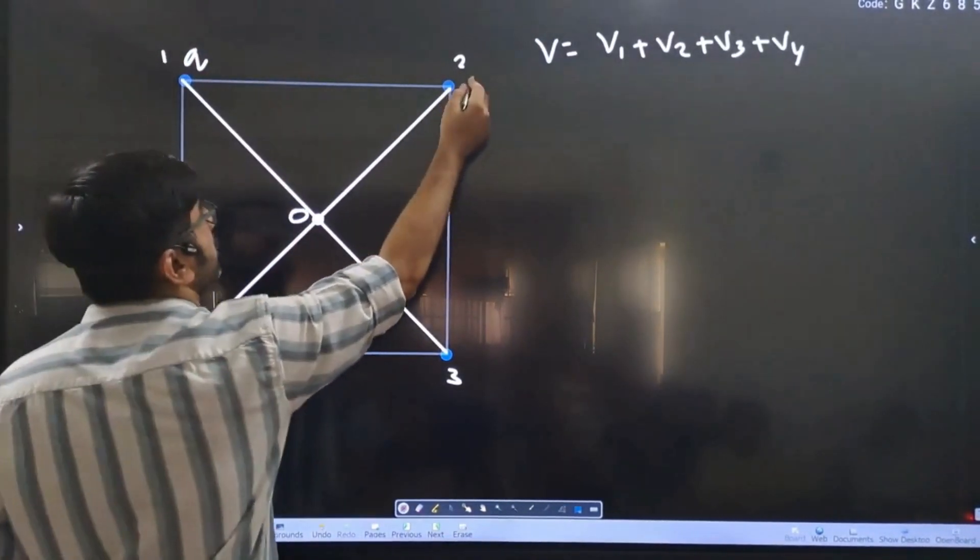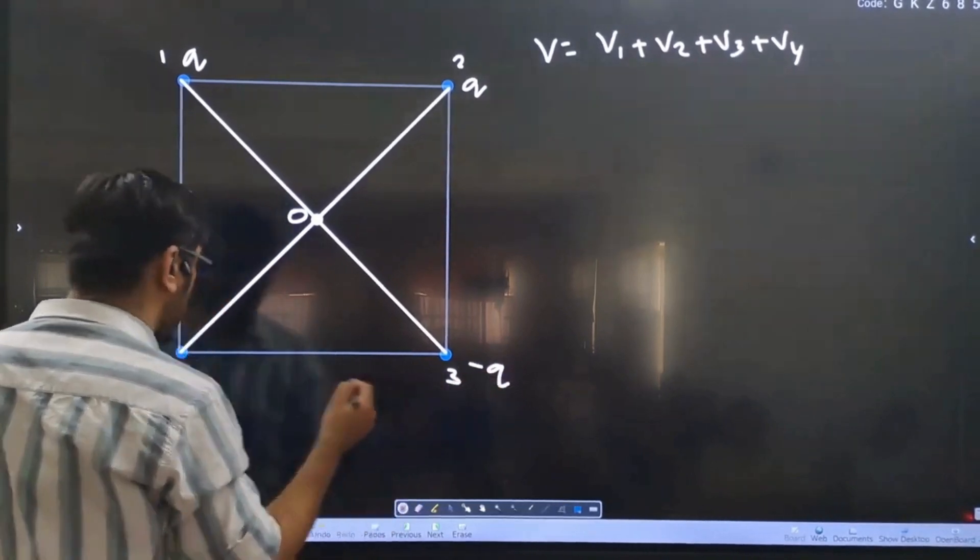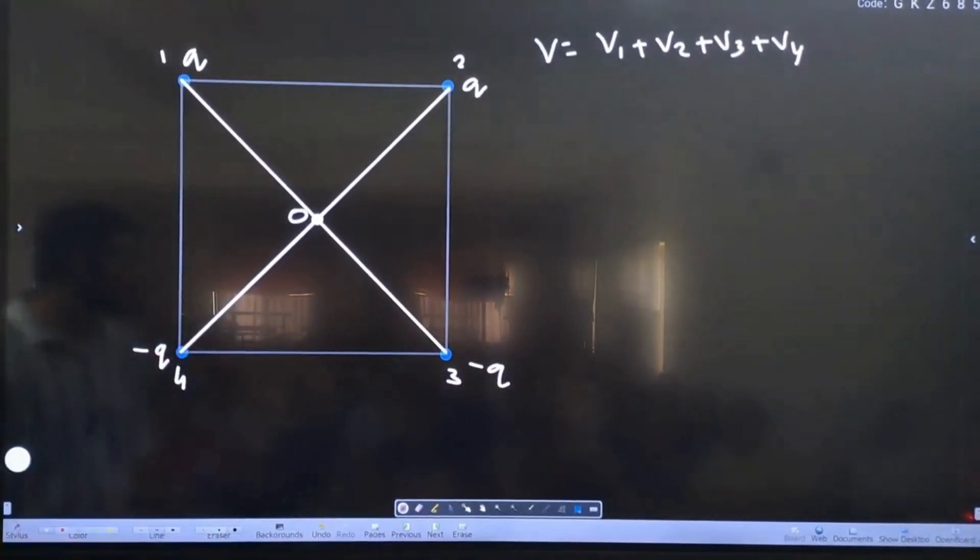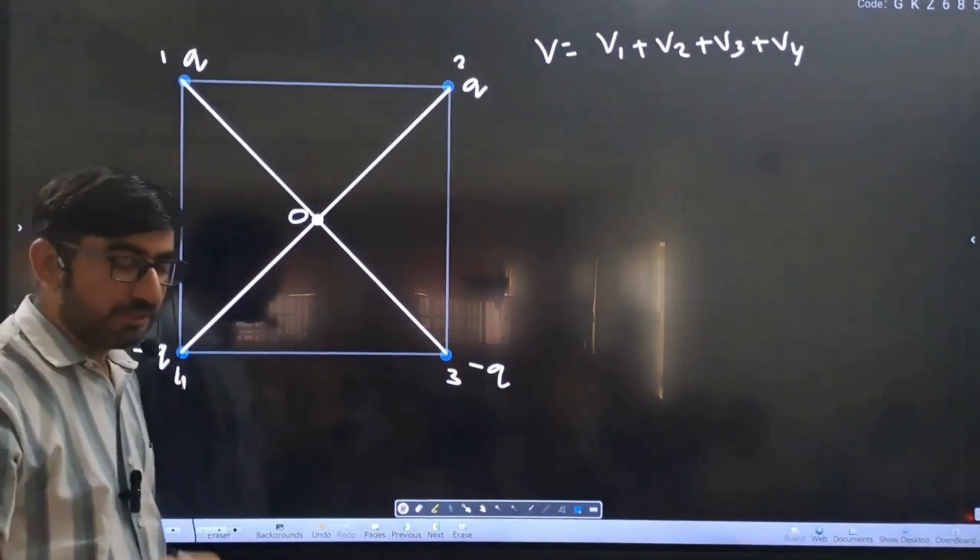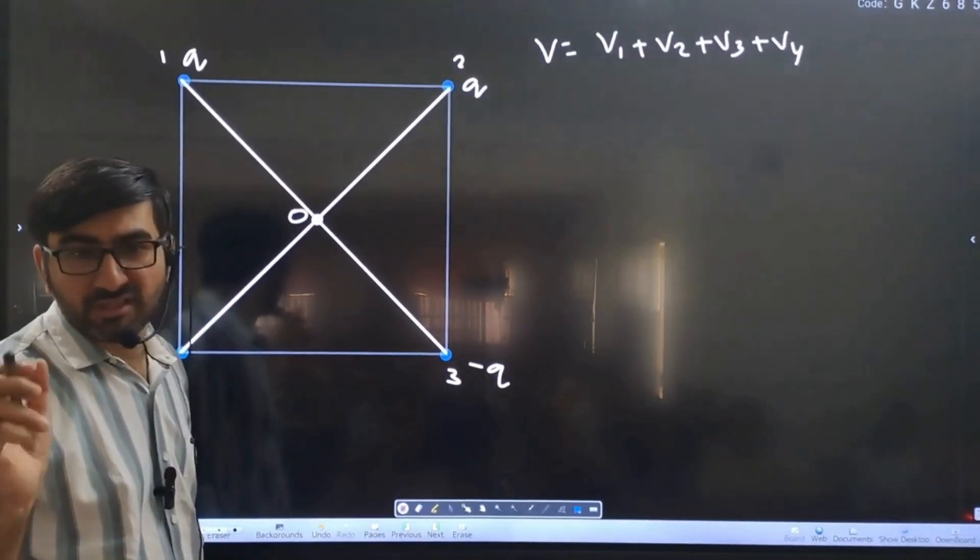Here the charge is +q, here +q, here -q, here -q. The answer is zero. Because the potential is not a vector quantity, it is just a scalar quantity.